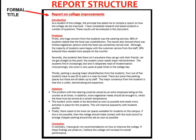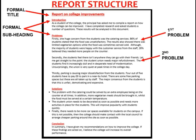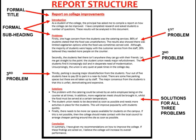Looking at the report structure: I've got a formal title — 'Report on College Improvements' — then subheadings for Introduction, Problems, Solutions, and Conclusion. Under Problems, I've done a paragraph on catering, a paragraph on the student union, and a paragraph on parking — three or four sentences each. For Solutions I've used bullet points with one or two sentences on how to solve each problem. Then a short conclusion: 'In summary, I've given my recommendations on how to improve the college. If these findings are acted on, I believe the college will increase its overall performance.'